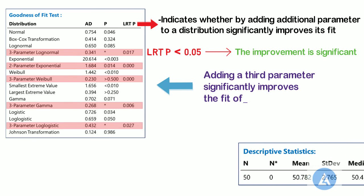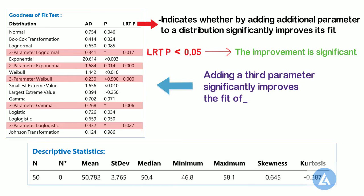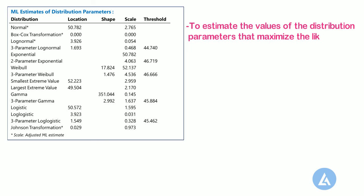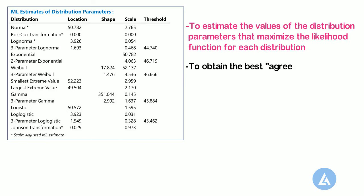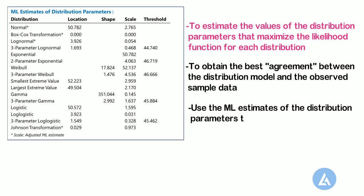These results also include descriptive statistics for all records of calcium content, such as number of non-missing values, number of missing values, mean, standard deviation, median, minimum, maximum, skewness, and kurtosis values. The method of maximum likelihood (ML) is used to estimate the values of distribution parameters that maximize the likelihood function for each distribution, with the goal of obtaining the best agreement between the distribution model and the observed sample data.